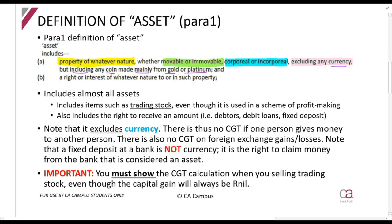It includes any coin made mainly from gold or platinum, so something like a Krugerrand will be included. And it includes any right or interest to or in such property. If I have a debtor - I sell goods to a person on credit, so they have to pay me - that debtor is an asset. If I sell that debtor to someone, I can calculate a capital gain or capital loss on that.